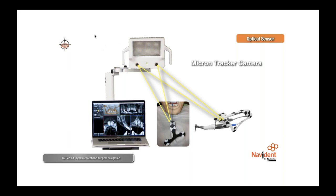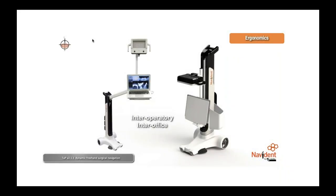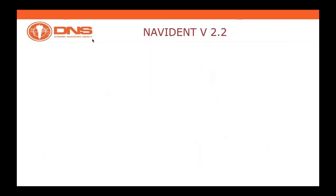All these movements, thanks to the software, are matched to the 3D CBCT images of the patient. The benefit is that you have a real-time feedback of what you do as a surgeon on the patient. Navident is a portable inter-operatory, inter-office device which allows the surgeon to operate with real-time feedback on patient anatomy. That was a small introduction for newcomers who haven't had the opportunity to work with Navident.